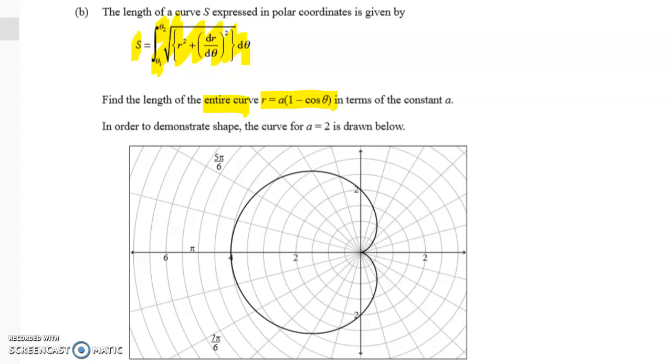So they've given us one example of this where the parameter a is 2 and it's drawn here. So let me just draw that loop. What we've got to use that picture for is to figure out what's the smartest way to do this question.